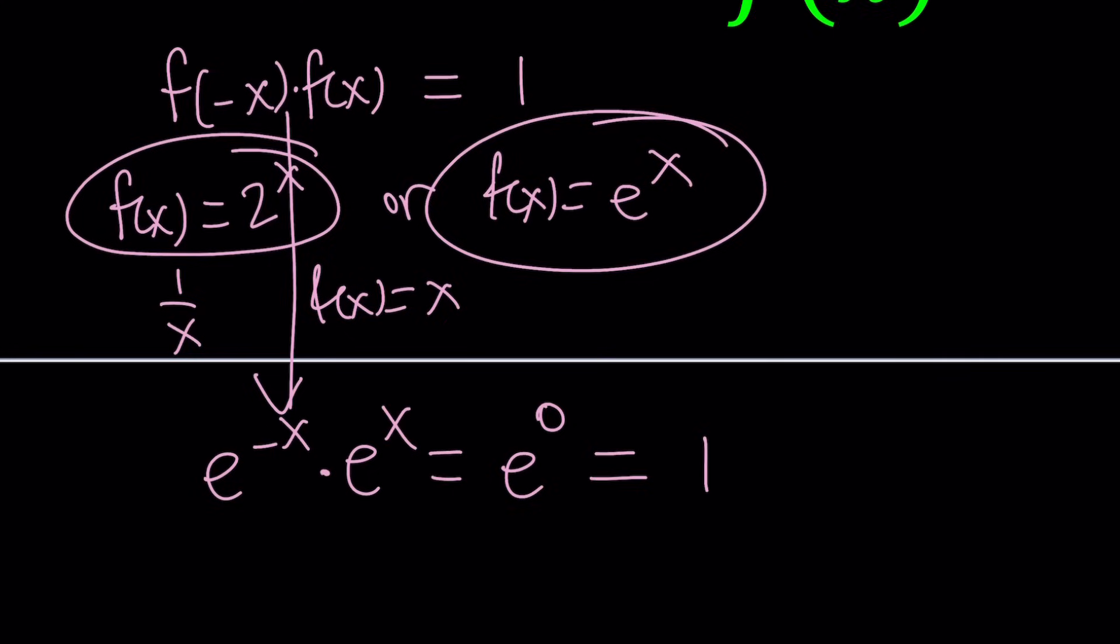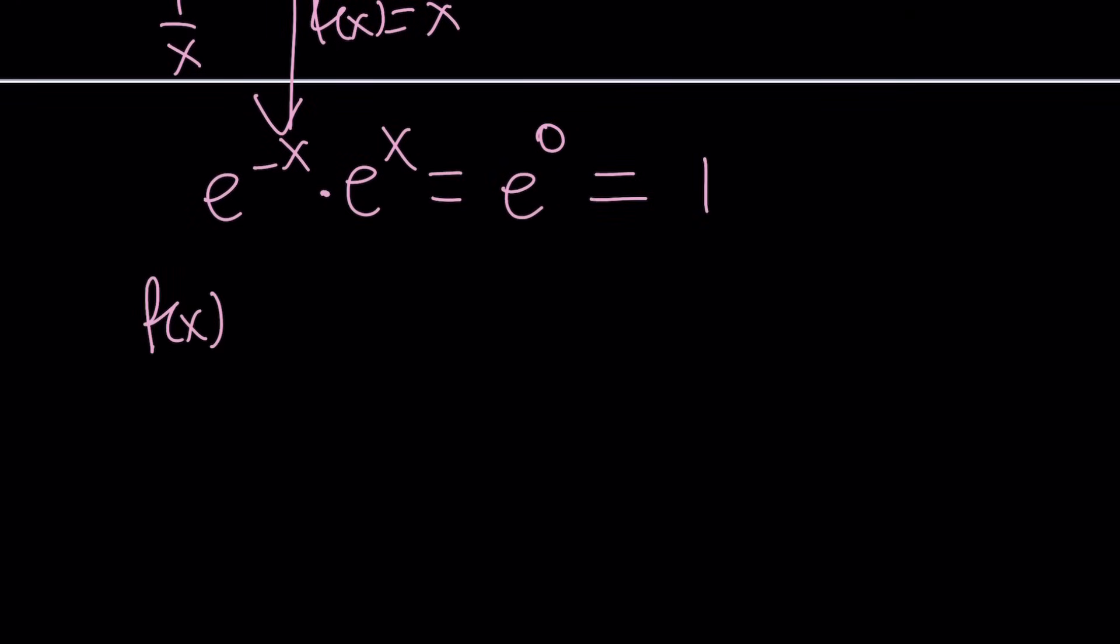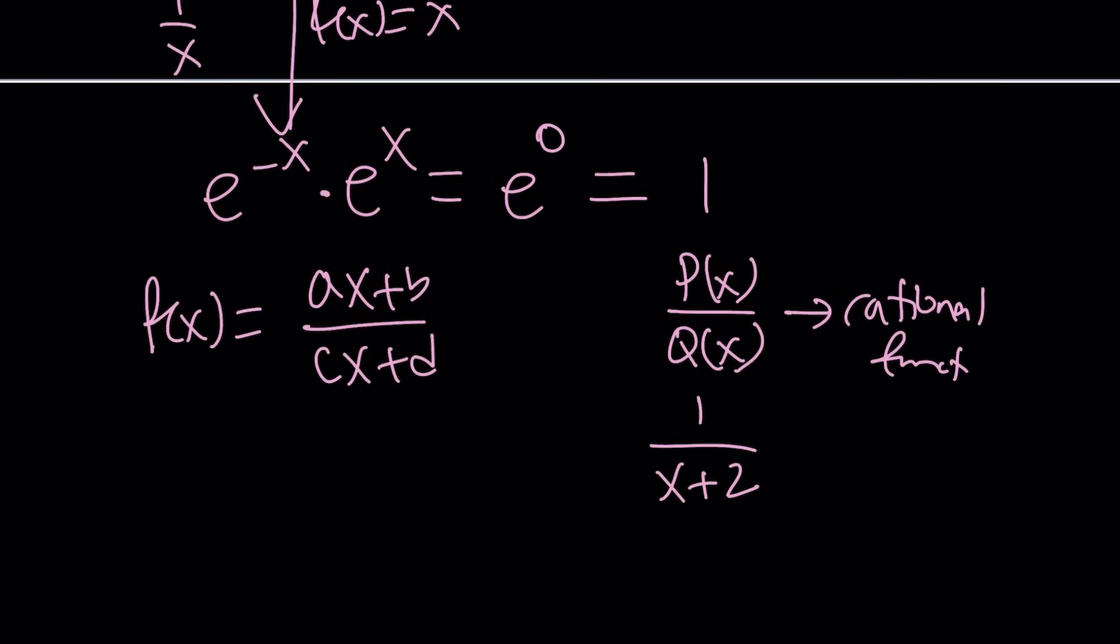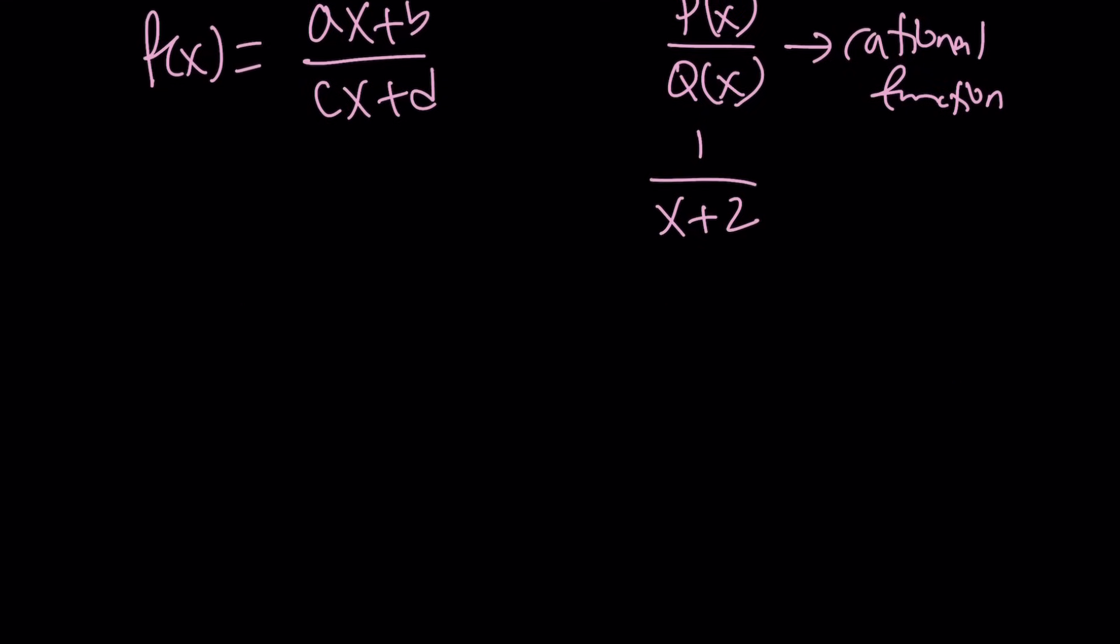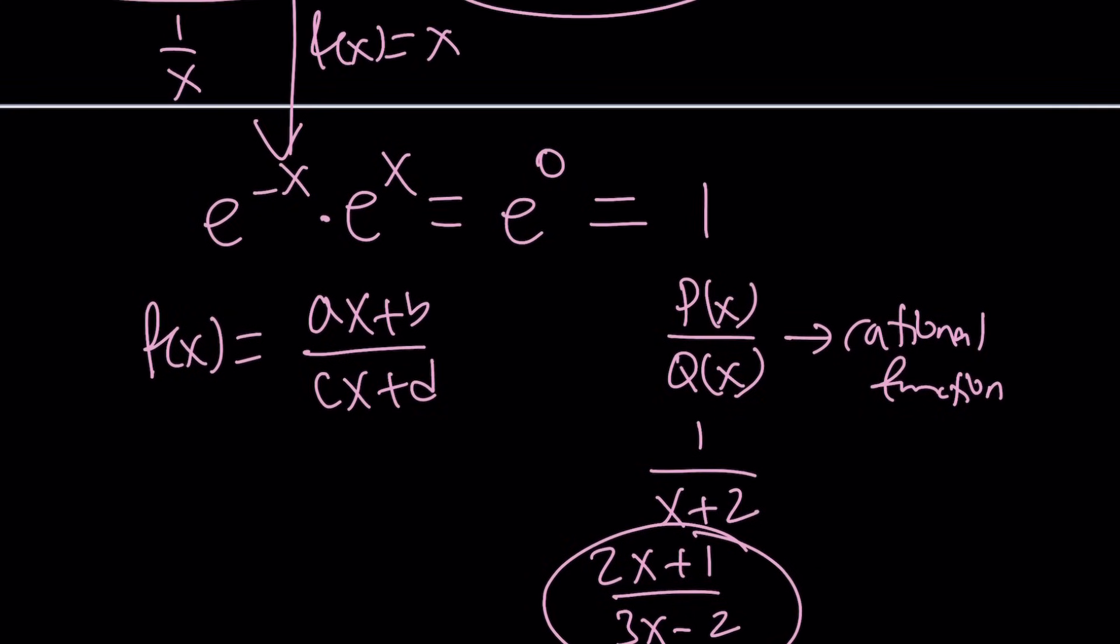Another thing I want to explore is can f be rational? In other words, can f of x be written as ax plus b over cx plus d? By the way, these are not the only rational functions. In general, if p and q are polynomials, then p of x divided by q of x is considered a rational function. So 1 over x plus 2 is also a rational function. 1 over x didn't work. This probably is not going to work either. But maybe 2x plus 1 over 3x minus 2 will work. You can always plug it in and test it out.